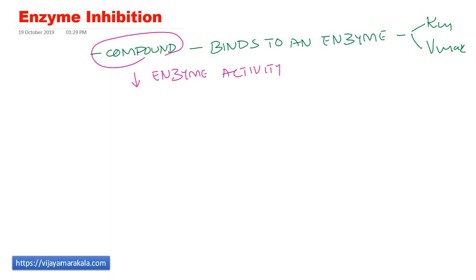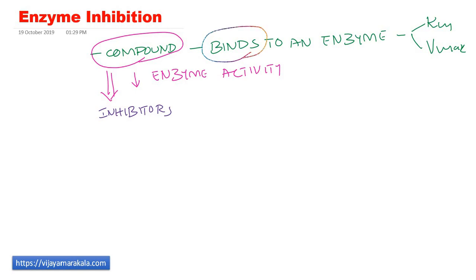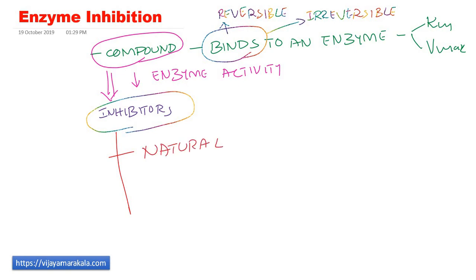These molecules or compounds are called inhibitors, and this binding could be reversible or irreversible. These inhibitors are present in our body — they could be natural, like in our metabolic pathways. Once a product is formed, it can inhibit rate-limiting enzymes of that particular pathway. So enzyme inhibition is also present in our body as natural inhibitors.